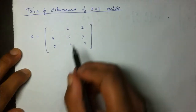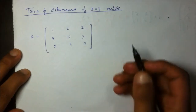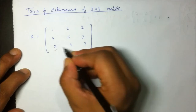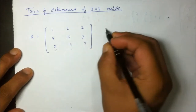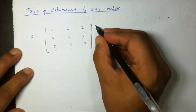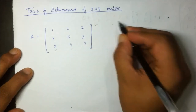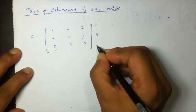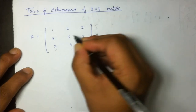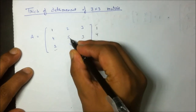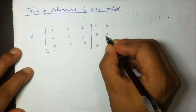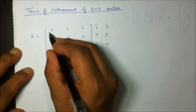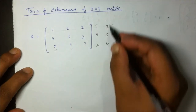What I am going to do is add two extra columns — column number one and column number two — placed as column number four and column number five, giving [1, 4, 2] and [2, 5, 4]. Now I have a matrix with three rows and five columns.